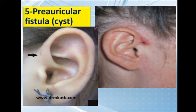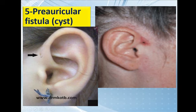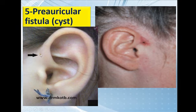Next is the preauricular fistula — it is an opening in front of the helix or at the root of the helix. This opening is not connected to the inside; it has a blind end, so it should actually be called a sinus, not a fistula, because a fistula is a connection between two openings. It may have a cyst. If the opening is obstructed by dirt, it can lead to infection with redness, hotness, small swelling, and pain — forming a small abscess, which is inflammation of the preauricular sinus.